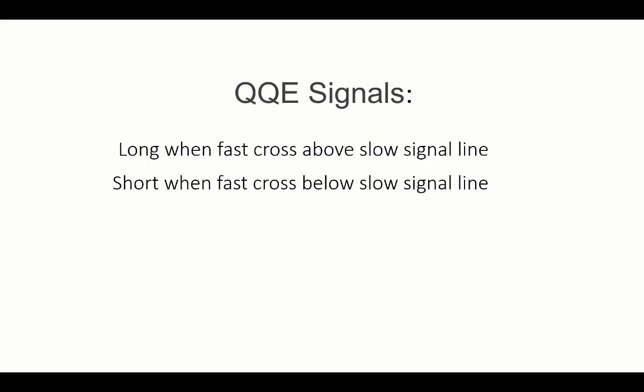Just to kick off, here's a quick recap of the QQE signals. We're looking for crossovers — a long setup when the fast crosses above the slow signal line to the upside, and the opposite short when the fast crosses below the slow to the downside. We also have additional levels or thresholds to help define a directional bias, for example the midline. You can condition these crossovers and say you only want long setups if the RSI is moving above the 50 threshold.